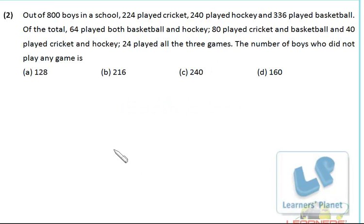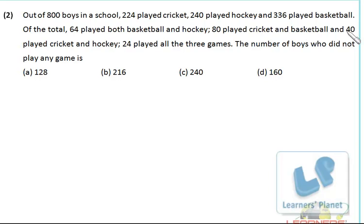Now we see this problem. Out of 800 boys in a school, 224 played cricket, 240 played hockey, 336 played basketball. Of the total, 64 played both basketball and hockey, 80 cricket and basketball, 40 cricket and hockey, and 24 played all three games. Find the number of boys who did not play any game.